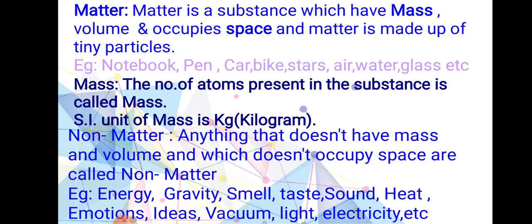Notebook, pen, car, bike, stars, air, water, glass — all of these we can call matter. What is mass? The number of atoms present in a substance is called mass. The total number of atoms present in any substance we can call it as mass.